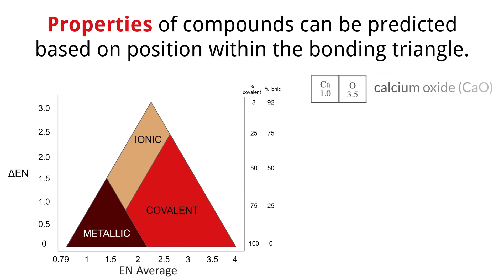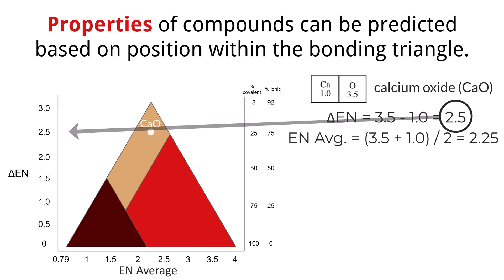Looking back at our calcium oxide compound, we again see where calcium oxide is on the bonding triangle. Since it has a high electronegativity difference and a relatively low electronegativity average, it falls under ionic as the bond type. Let's take a couple other examples to show the range in our triangle.